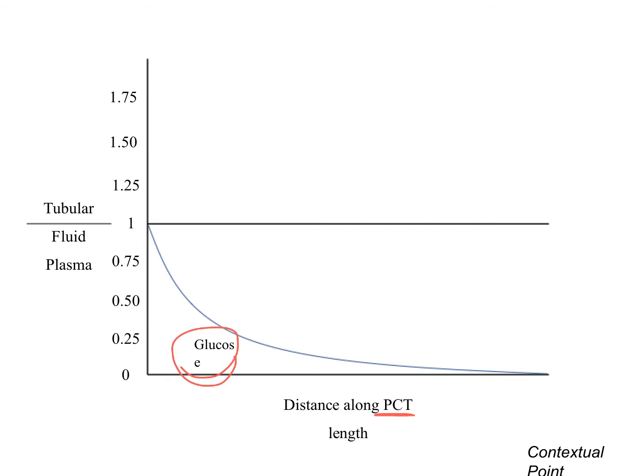Also, we can see physiologic glucosuria in pregnant women. So, as we know that we are reabsorbing glucose in the proximal convoluted tubule, the glucose concentration in proximal convoluted tubular fluid relative to plasma decreases along the proximal convoluted tubule and goes to zero. This should make sense.